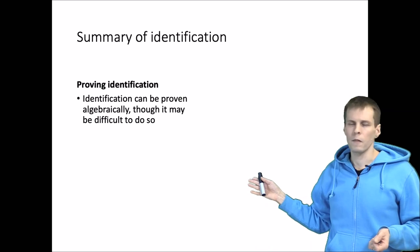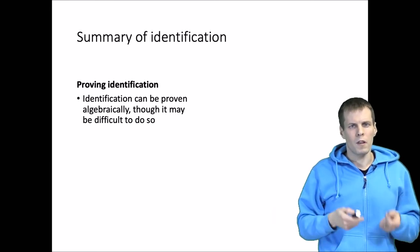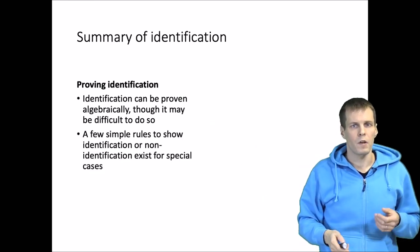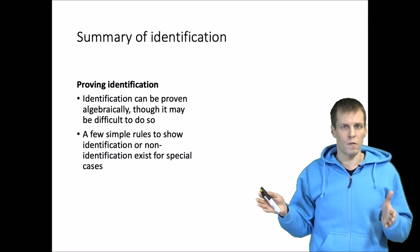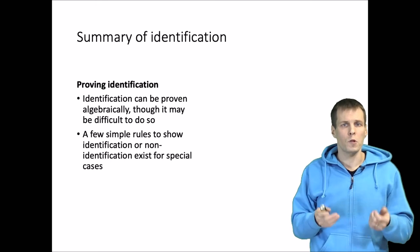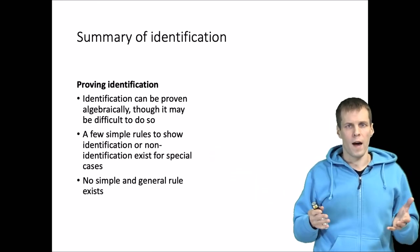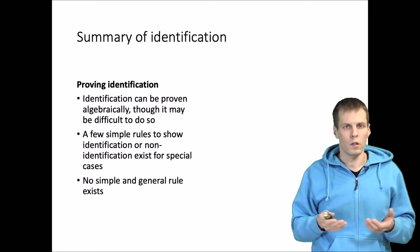In summary, identification can always be proven using algebra, but doing so can be difficult for large models. Most researchers don't try to prove that each individual parameter can be solved from the population covariance matrix. Fortunately, we have easy-to-use rules: the null B rule, the T rule, the order condition, and the block recursive rule. These cover most scenarios applied researchers face. Unfortunately, no simple general rule exists — there are always models not covered by these rules, such as feedback loops of four variables with only one instrument and no correlated disturbances. In those cases you need to use algebra or test for identification empirically.